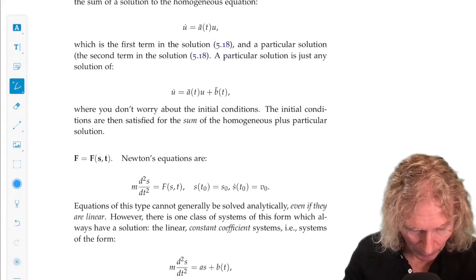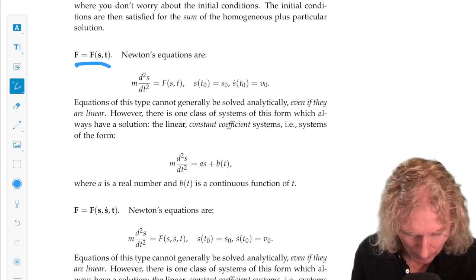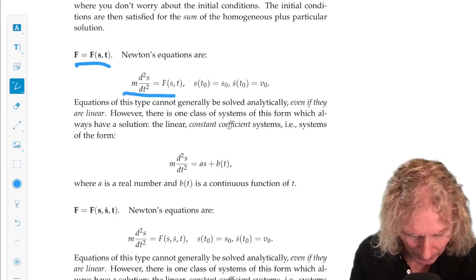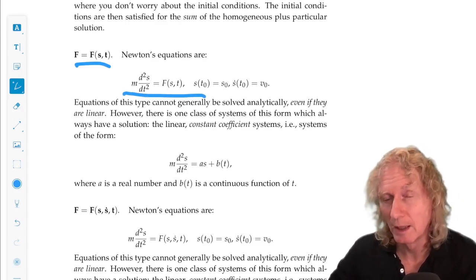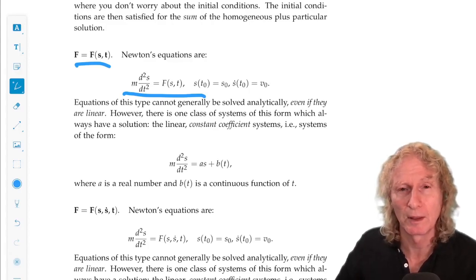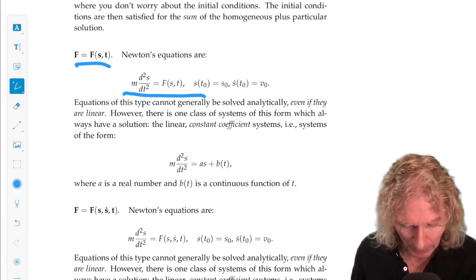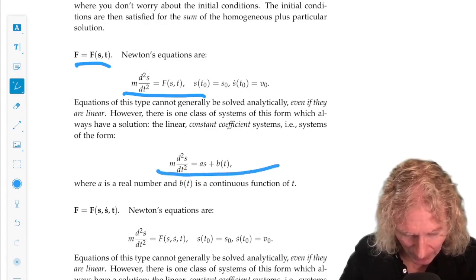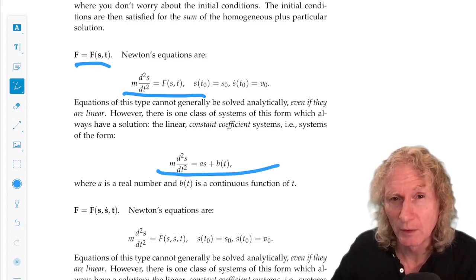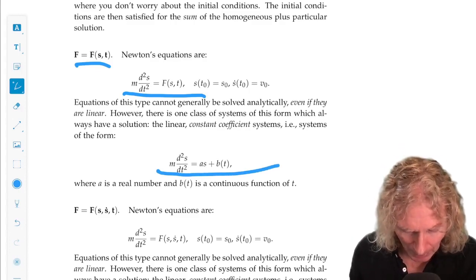Now what if F depends on s and t? That is a complicated equation in general if it's a nonlinear function. In fact, there are examples of functions like that, force laws, where the resulting Newton's equations are chaotic. Maybe touch on that later. But if the right hand side is linear and a is constant, but b(t) can be time dependent, that can be solved.